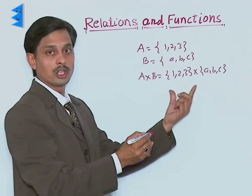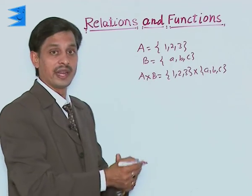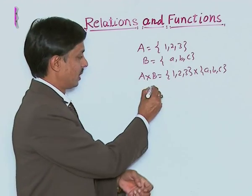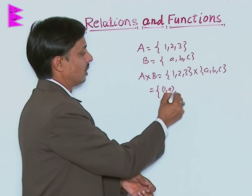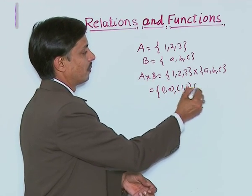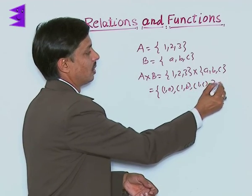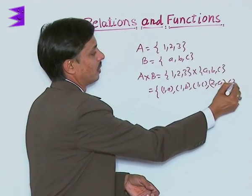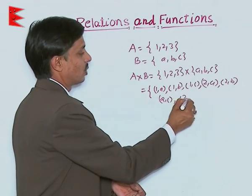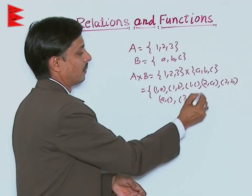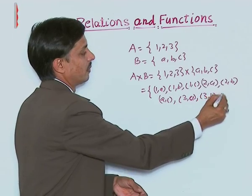When this cross product of the two finite sets is required to calculate, we will write 1, A, then 1, B, then 1, C, 2, A, 2, B, 2, C, next order pair 3, A, 3, B, 3, C.